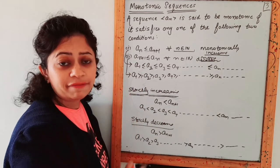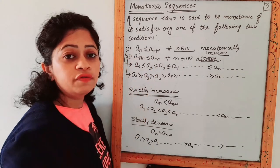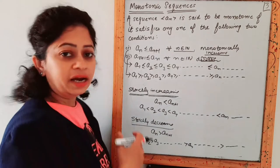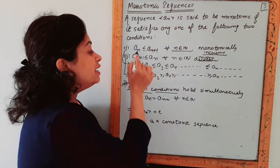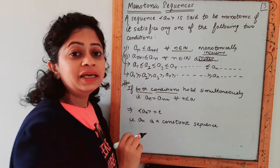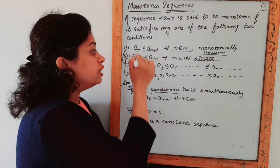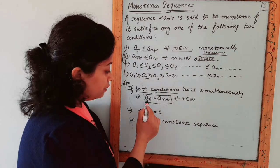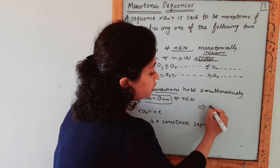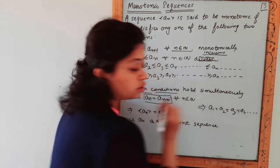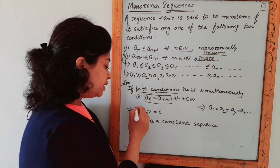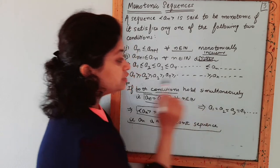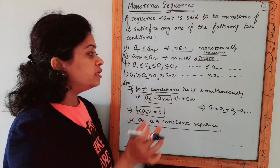If a sequence fulfills both conditions — an+1 ≥ an and an+1 ≤ an — simultaneously, then an = an+1 for all n ∈ ℕ. This means a1 = a2 = a3 = ... All members are equal, so this is a constant sequence.